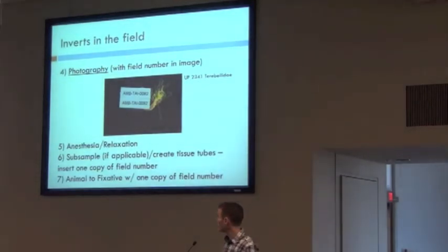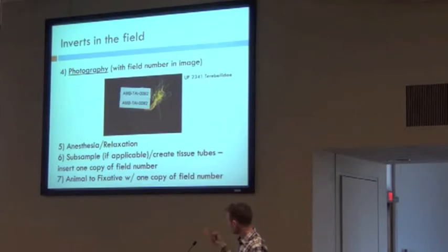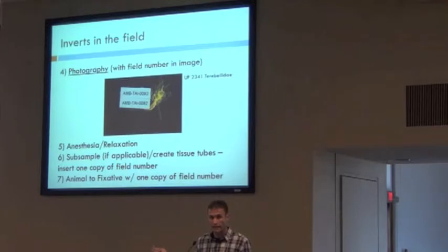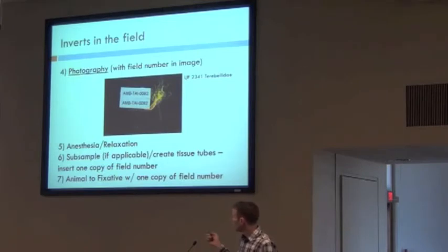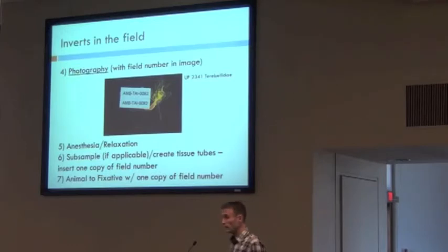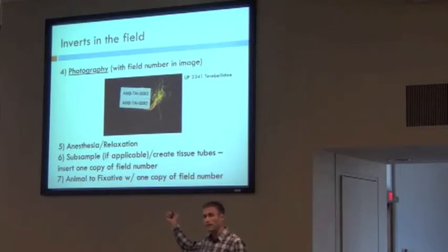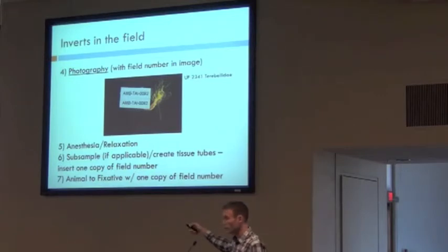Those two copies of the same field number go with the specimen — a pterobellid worm in this example — and are included in the photograph. The specimen can be photographed alive or after it's been relaxed, depending on what characteristics they're trying to capture. After photography, anesthesia, and relaxation are completed, the specimen will be subsampled for DNA if they decide to do that. One copy of that field number goes into the DNA tube, and one copy goes with the specimen, and they link in that way.